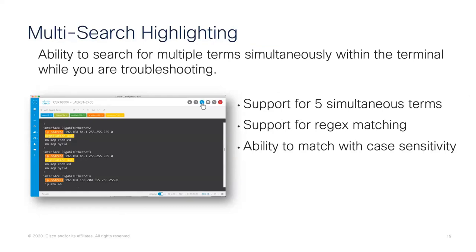Under the hood, as content from a show command scrolls across the screen, we pattern match to key terms, phrases, variables, and values in that output. We highlight inline elements including best practices, improvement opportunities, errors needing remediation, troubleshooting pointers, and links to useful documentation. These are written by TAC engineers who take their own interpretation of what a counter may mean and put that in as a useful insight. Multi-search highlighting allows you to search for up to five simultaneous terms and visually see them differentiated in your UI — it's regex-based.